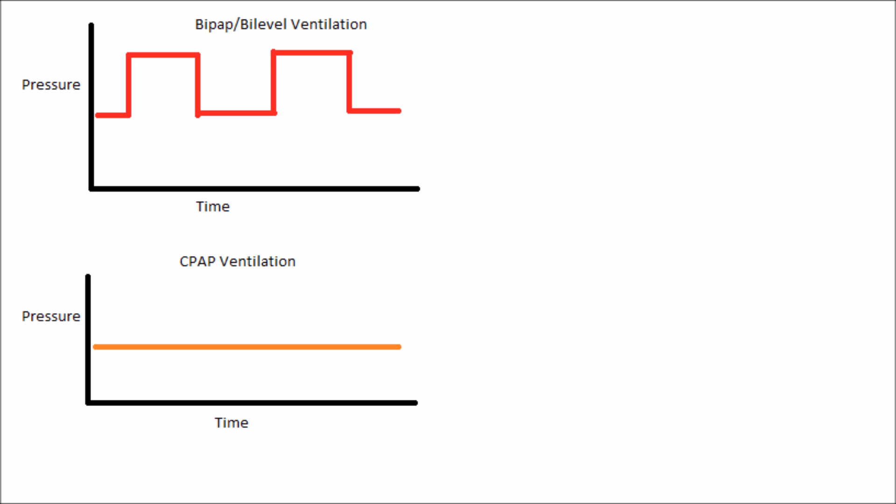So to clarify: BiPAP treats ventilation problems, such as high CO2, whereas CPAP is more of an oxygenation solution. When you give CPAP, it increases the mean airway pressure and thus improves oxygenation.